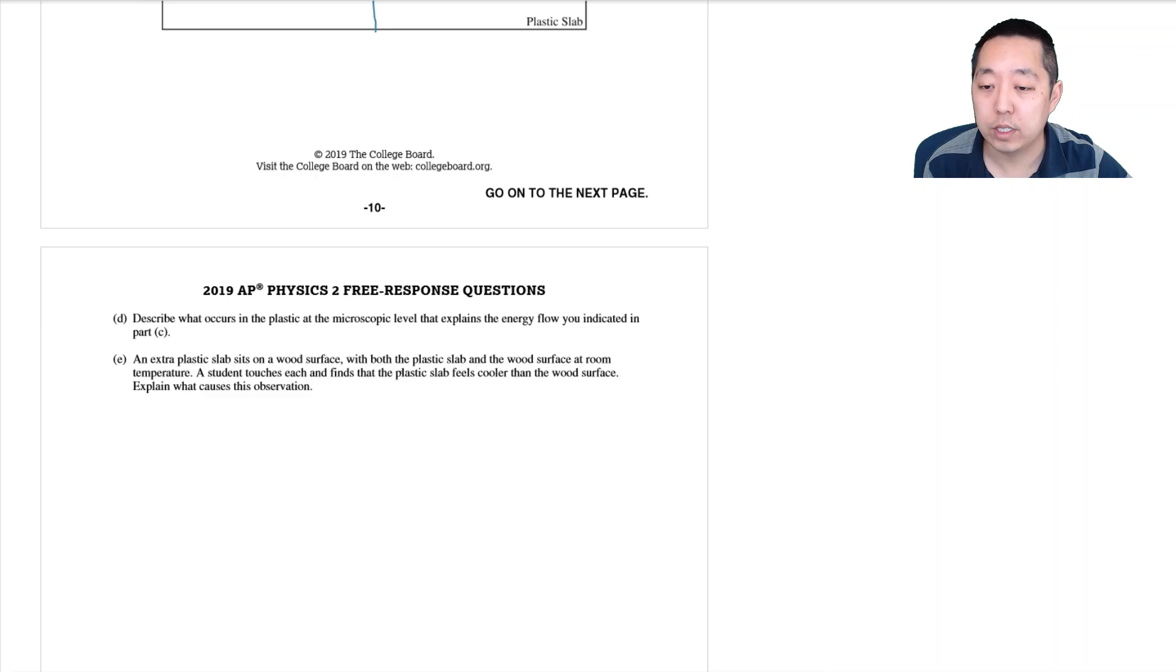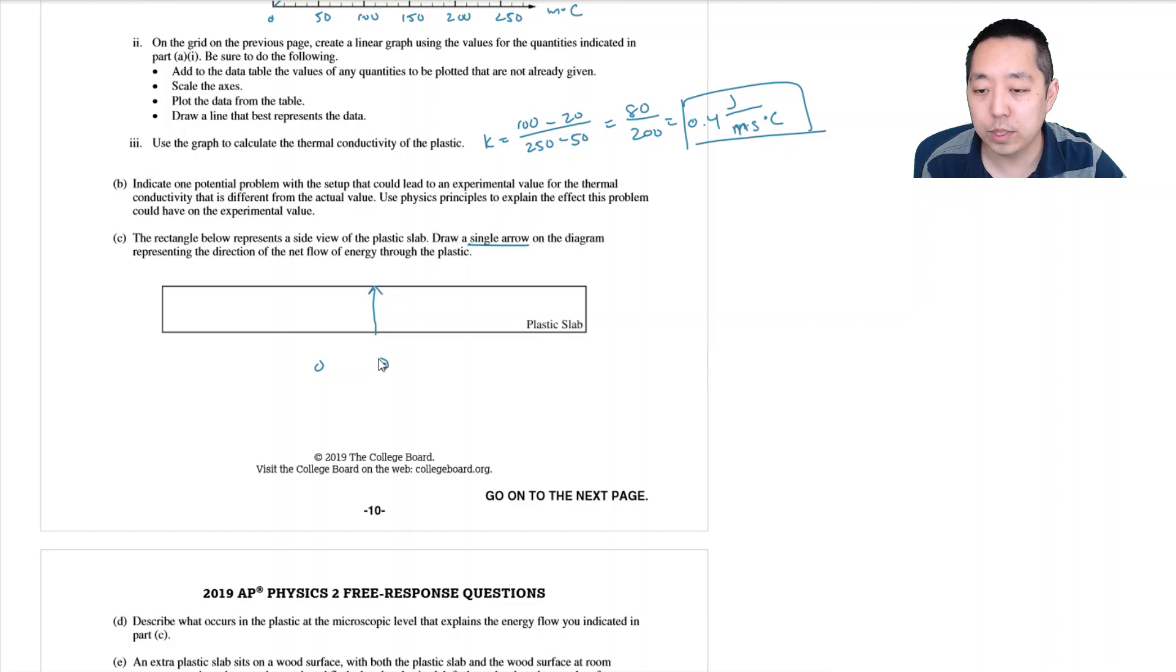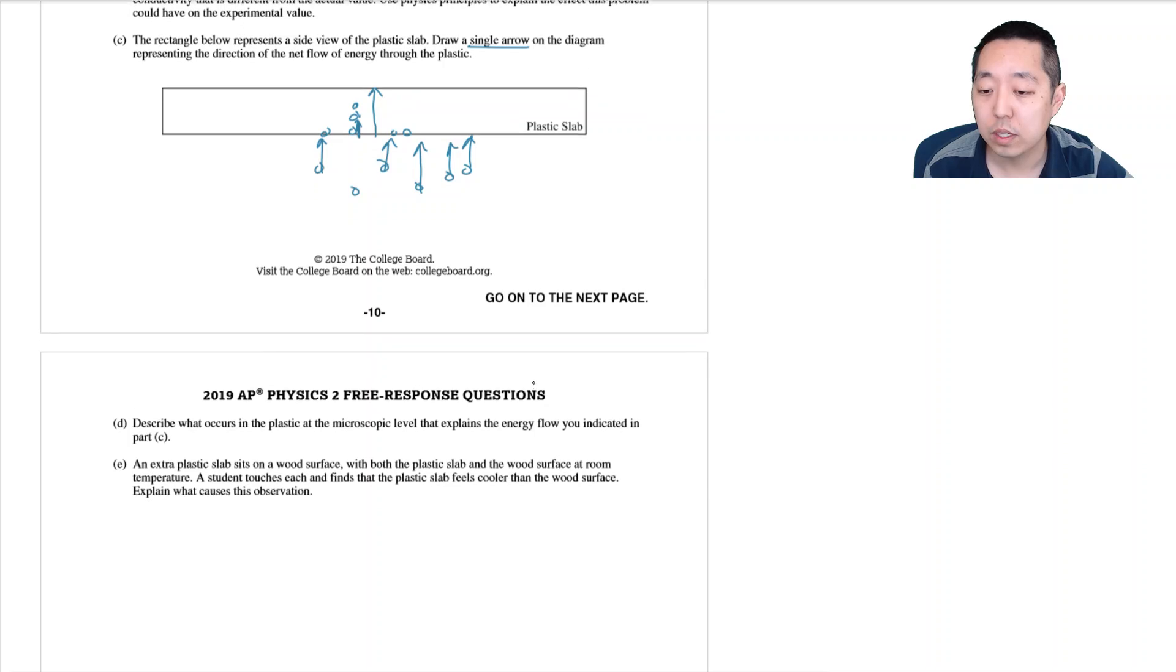Describe what occurs in the plastic at the microscopic level that explains the energy flow you indicated in part C. So what's happening is there's a bunch of little steam particles that are moving really fast because they've been heated up. And they hit the particles of plastic here. And these particles of plastic now move a little bit. And they collide with the particles up here. So the fast particles hit it. It imparts some kinetic energy onto the particles at the bottom of the plastic, which then hit the particles above it, which then hit the particles above it. And that's how heat transfer ends up happening.